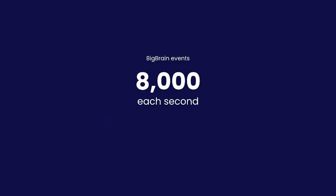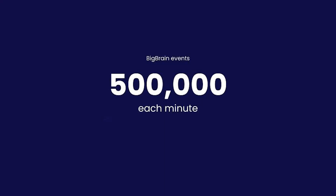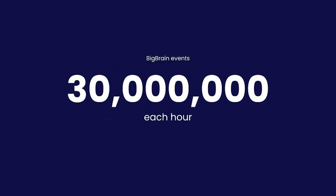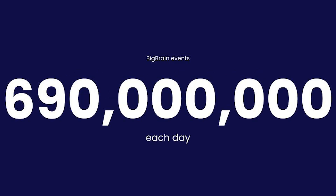Only in Big Brain: 8,000 events are logged every second — that's half a million each minute, 30 million each hour, and 690 million every day. And that's only Big Brain, because we also have tickets, Zendesk tickets, financial reports, A/B testings, and tons more information. Visualization is really our best friend so we can tell our story through data in a manner that's easy to understand.